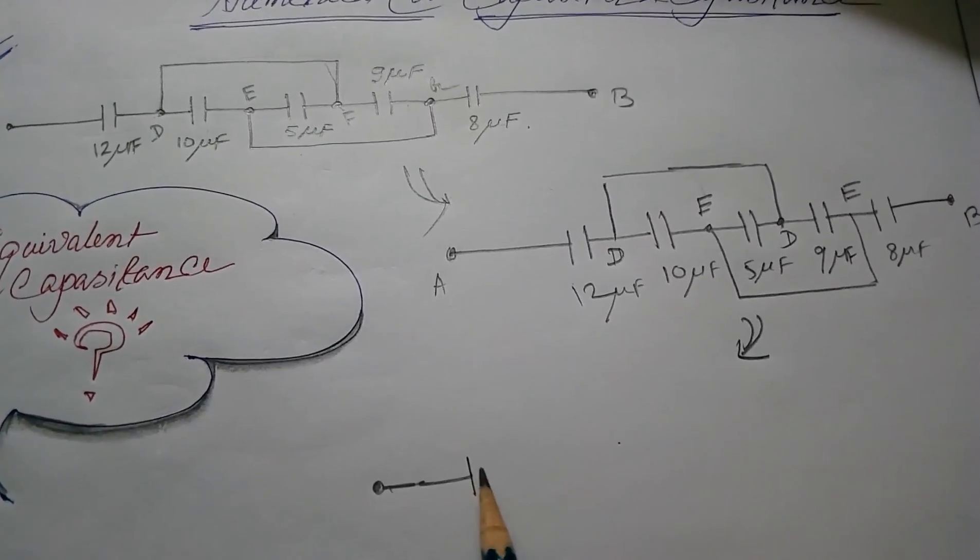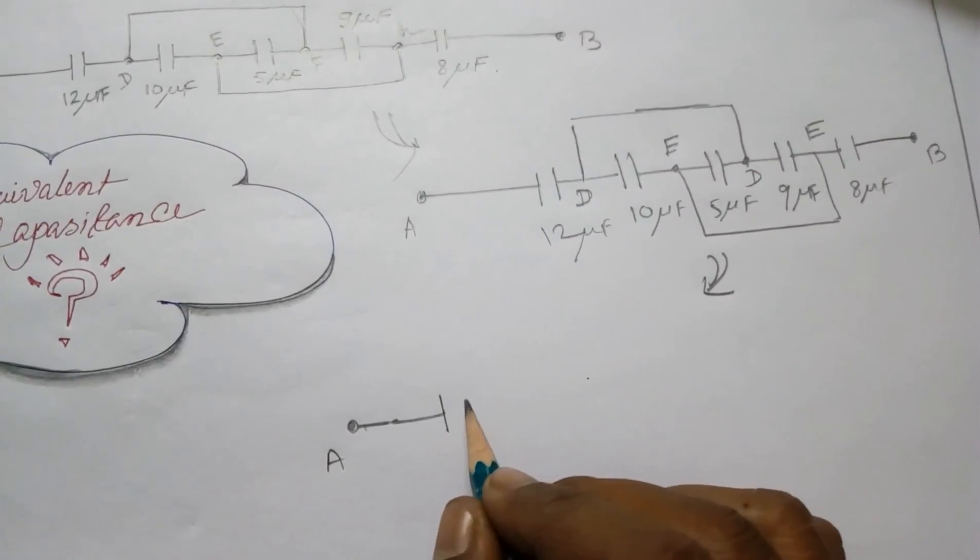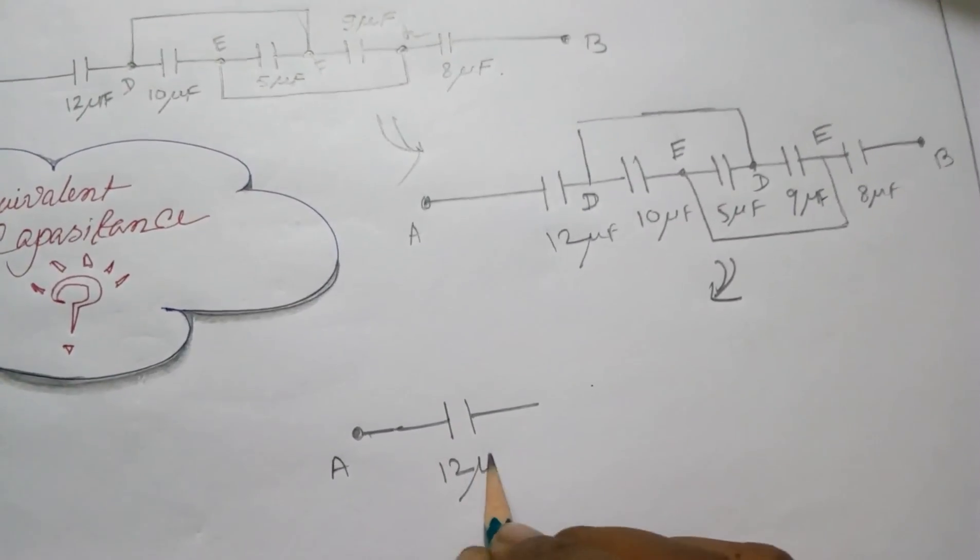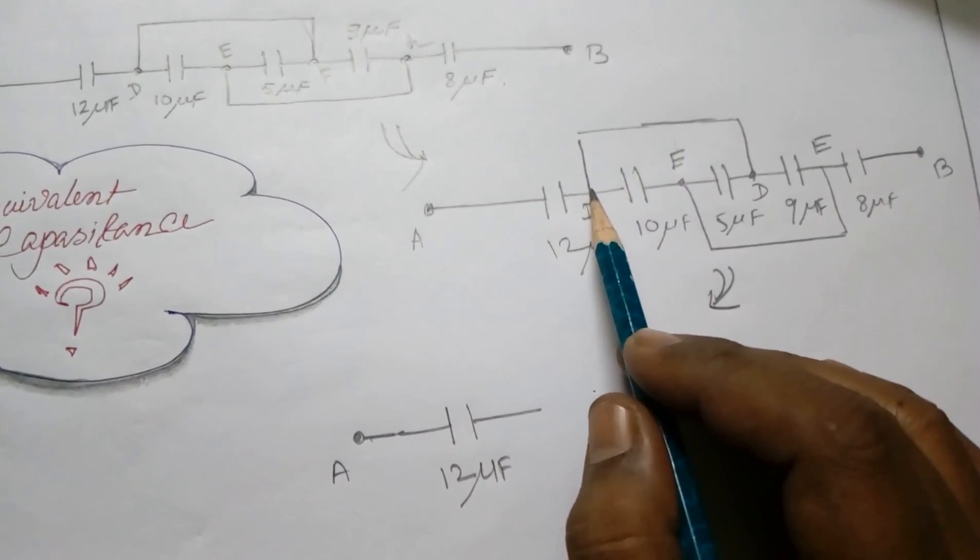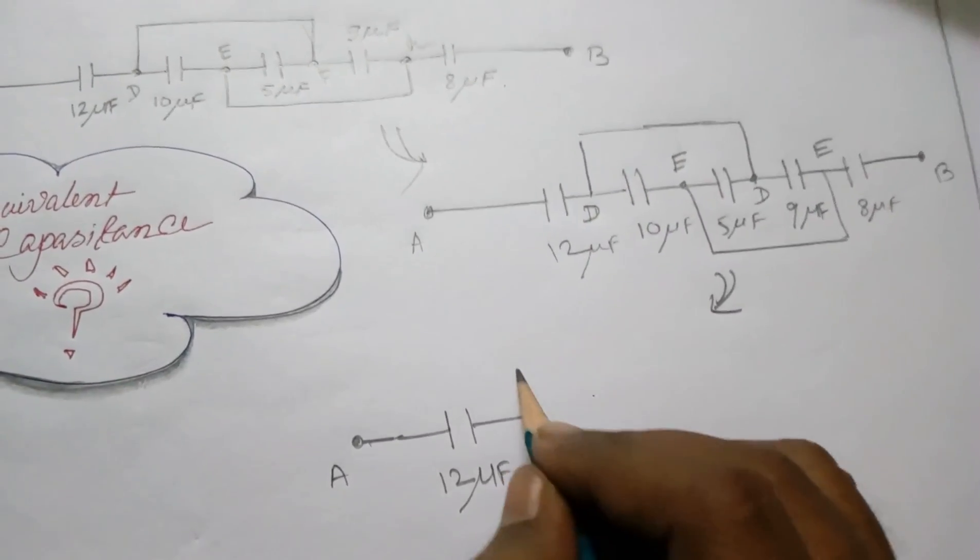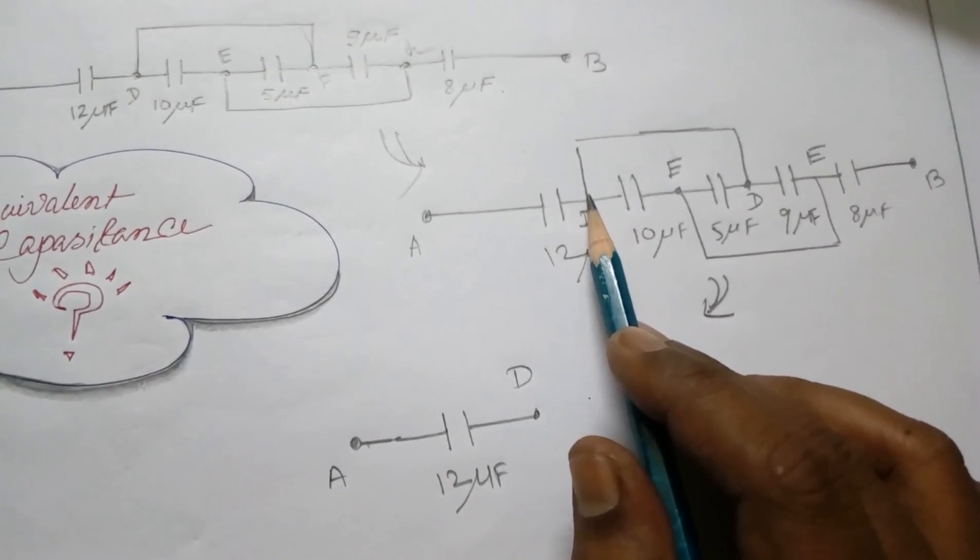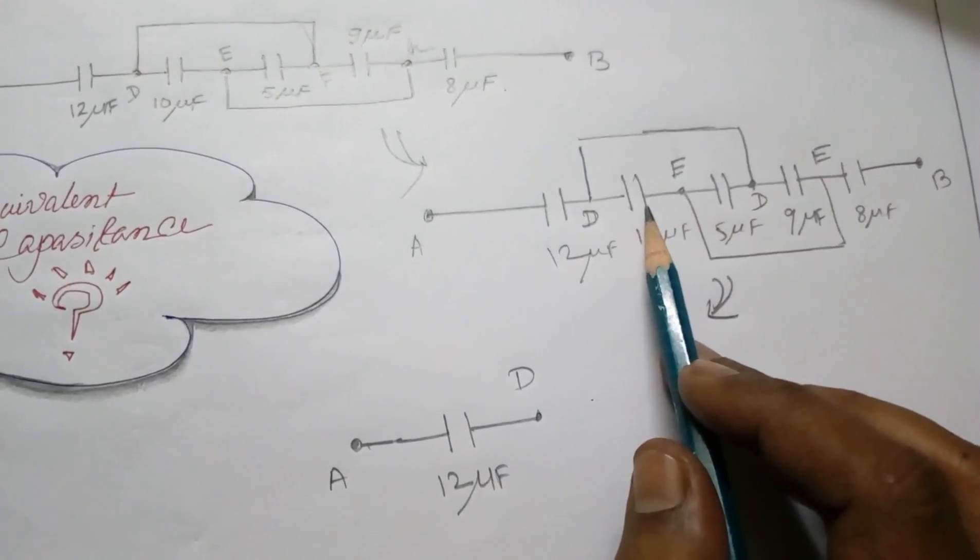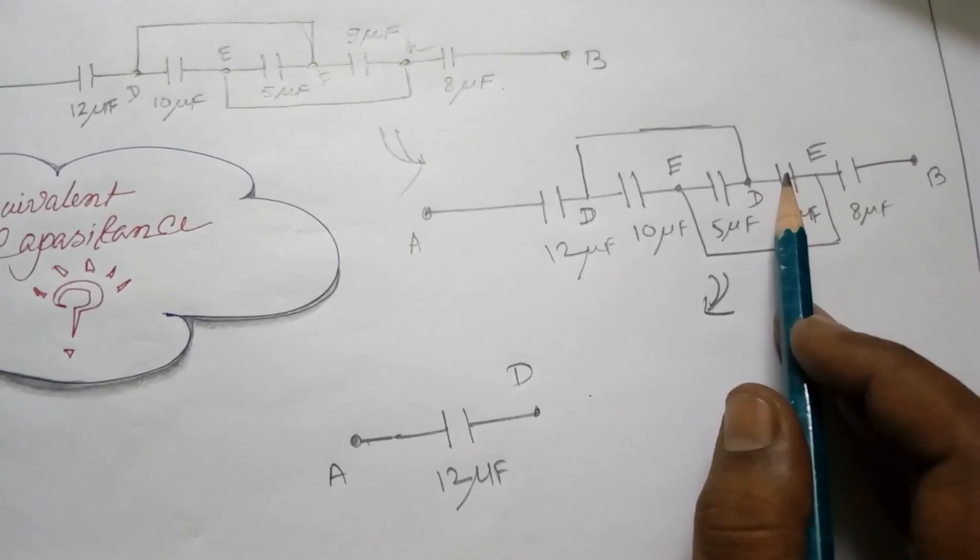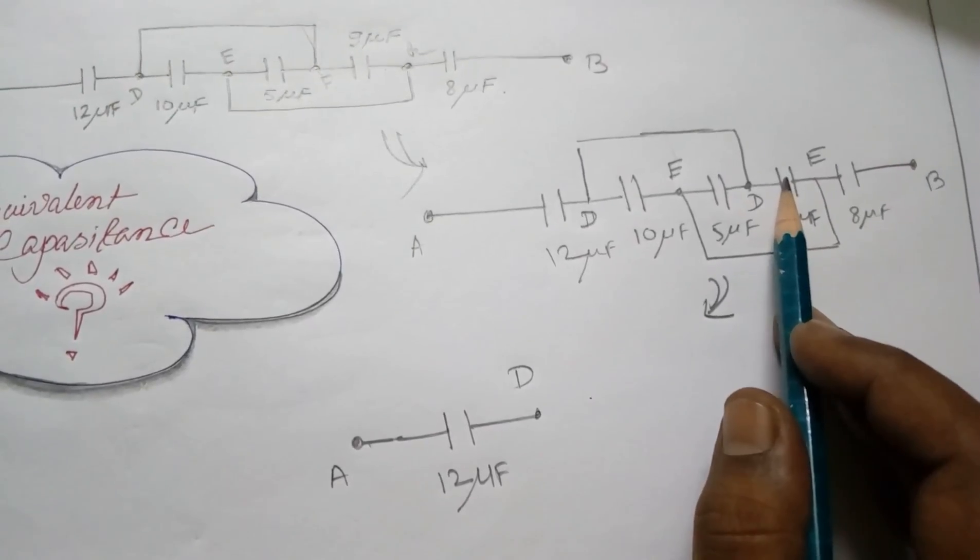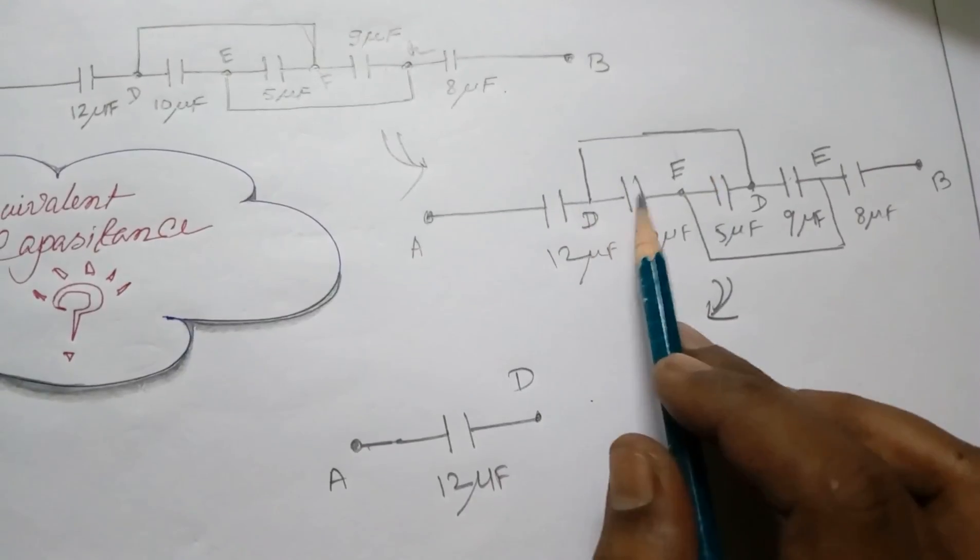So we have terminal A, and from A, 12 microfarad started. After that we have terminal D. From terminal D, 10 microfarad, 5 microfarad, and 9 microfarad are connected. So from D: 10, 5, 9 - these three capacitors are connected.